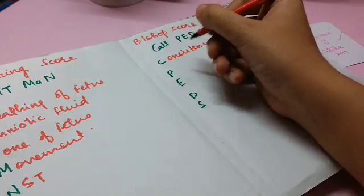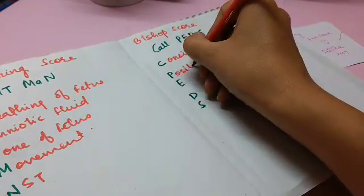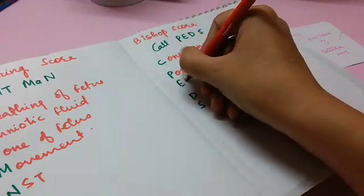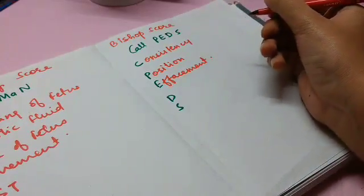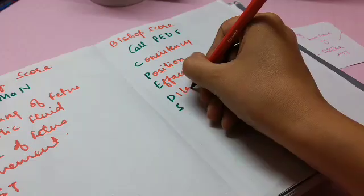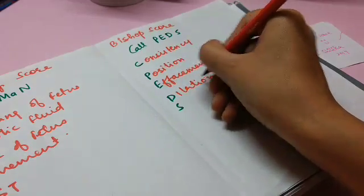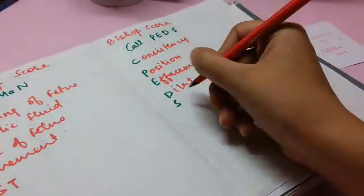P is for position, E is for effacement, D is for the dilation, and S is for station.